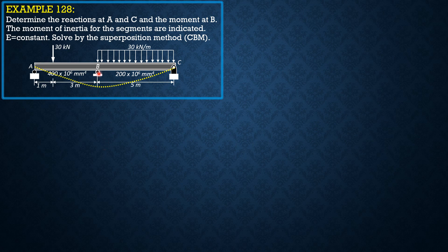That's the deflected shape assuming B is removed. When B is removed, the beam becomes simply supported and we compute the reaction at A: R_A × 9 equals 30 × 5 × 2.5 plus 30 × 8, giving 205/3 kilonewtons. At C it is 335/3 kilonewtons.